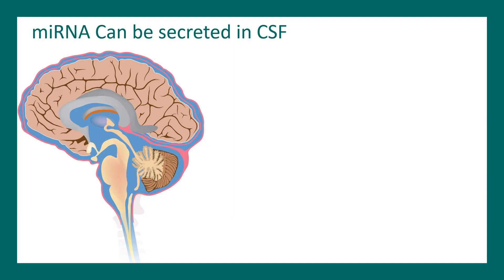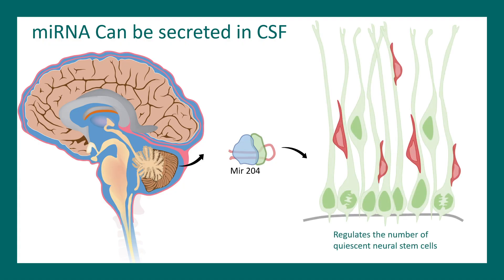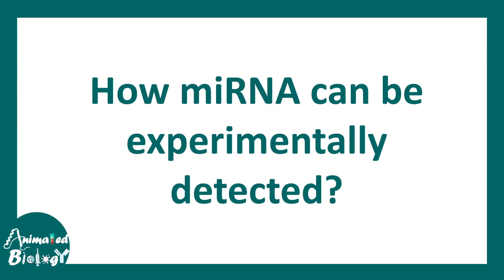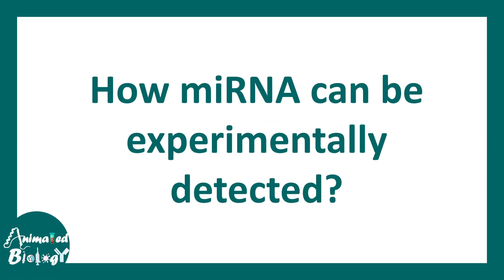MicroRNAs may also have diagnostic value. The cerebrospinal fluid (CSF) contains microRNAs such as MIR204, which regulate neuronal stem cells. These microRNAs secreted in the CSF regulate how neurons are born. MicroRNAs are also implicated in cancer — many of them go haywire in cancer cells.